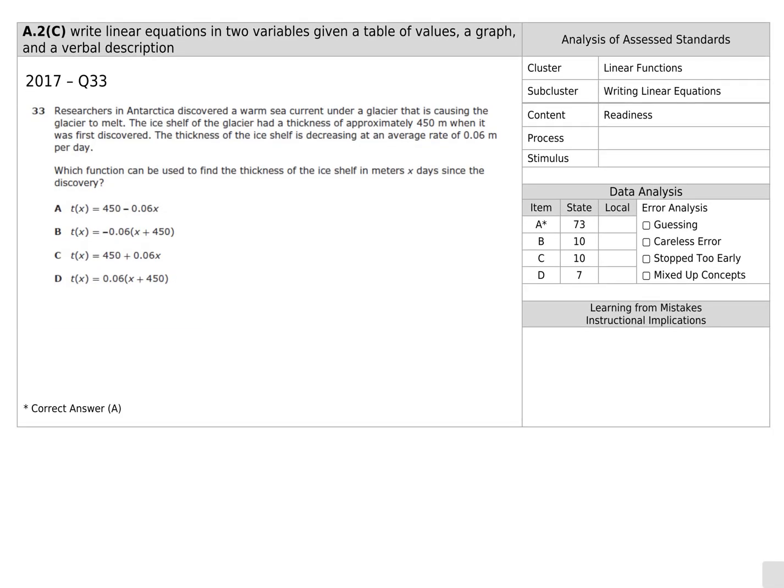Next question. We have another word problem. We see that it's talking about a glacier, and it is 450 meters when it first was discovered. So that would be a starting point, which might make us think that that's our b, our y-intercept. The thickness of the glacier is decreasing at a rate, so we're talking about slope, of 0.06 per day. That's that slope word, per. So we've got an idea that it's a slope-intercept equation. We have a starting point, 450. It had that much, and it's decreasing. It's losing. So we put a minus at a rate of 0.06 per day. That means it has the variable next to it, because it's repeating however many days times the decreasing rate. So we look at our answer choices, and we see that A is the correct answer.